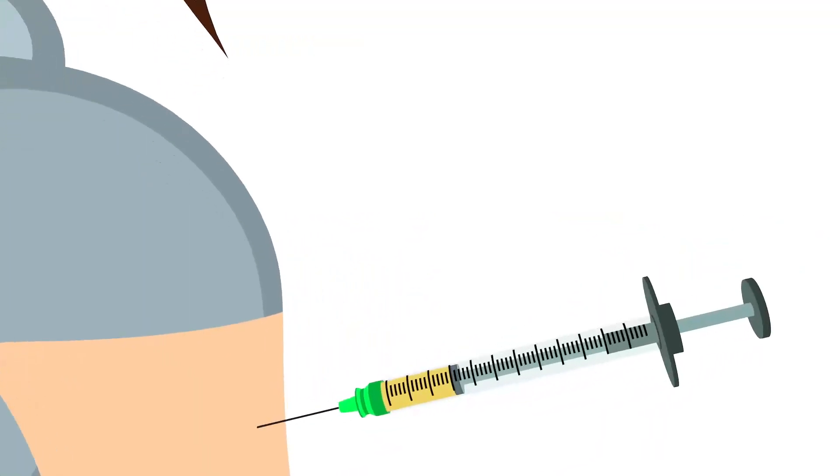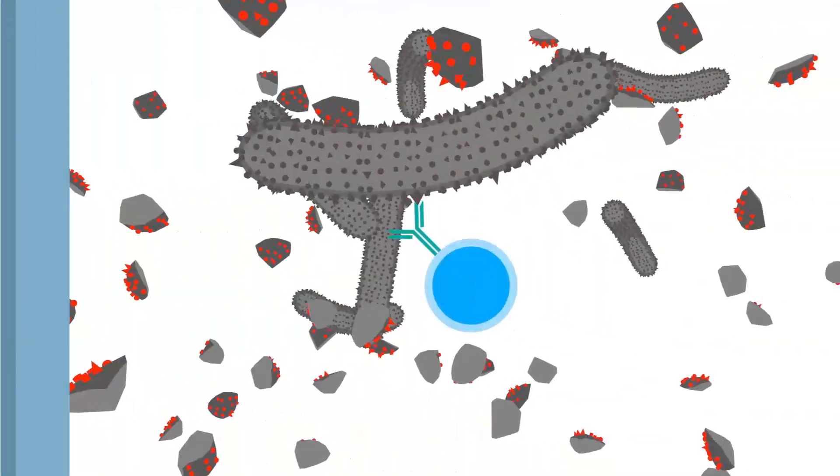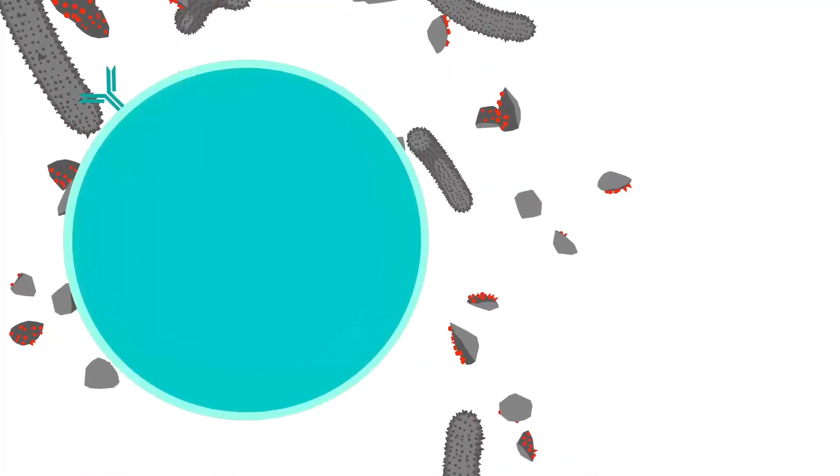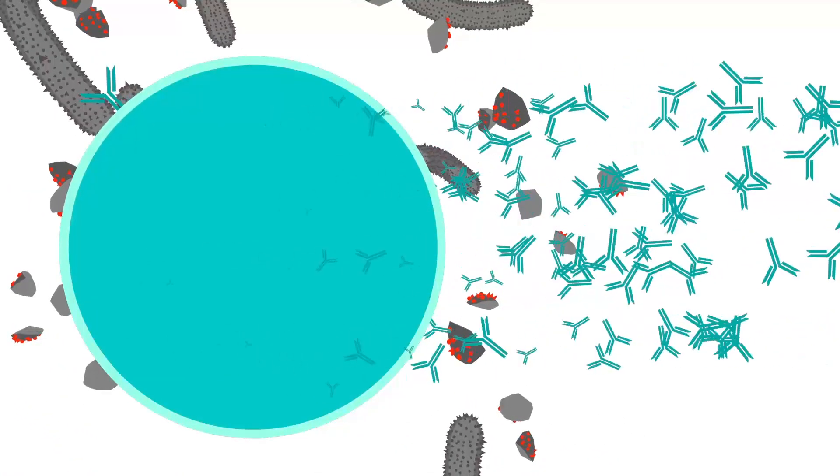Vaccines work in the same way. They contain weakened or dead bacteria or viruses, or even just a few proteins or sugars from the surface. This is enough to convince the immune system that a real invader has got in. The same process takes place as when real bacteria or viruses invade our bodies, except you don't get ill.